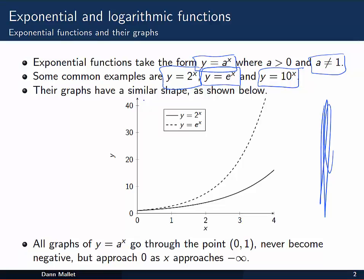Now all of these graphs of y equal to a to the x go through the point x equal to 0, y equal to 1. They never become negative, but as we move towards minus infinity, they approach 0 closer and closer the further we go. They just never touch it.